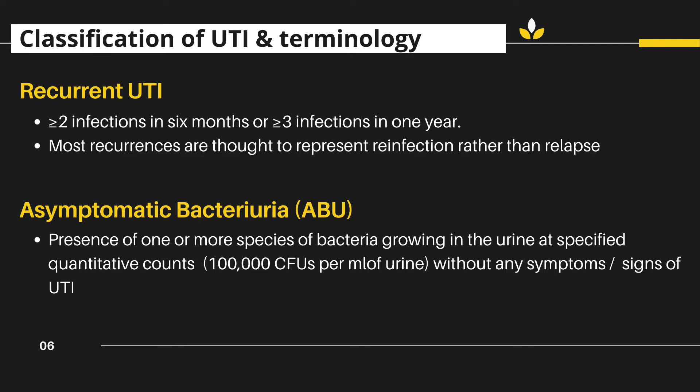Next is asymptomatic bacteriuria, also known as ABU — the patient has no signs and symptoms related to UTI, but on culture, the urine shows quite a number of bacteria, that is at least 10⁵ colony-forming units per ml. Usually this asymptomatic infection is not treated, except in pregnancy, where it has been shown to have a negative influence on pregnancy outcome.